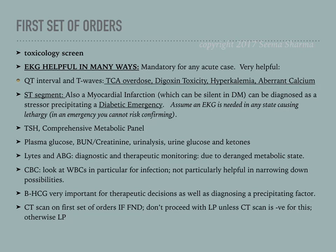The TSH, comprehensive metabolic panel, plasma glucose, urine glucose, and urine ketones help guide what kind of endocrinologic emergency you may have. BUN and creatinine assess kidney function, which can be affected in HHS due to intravascular volume depletion causing acute kidney injury. An ABG is critical to determine metabolic state — whether there is metabolic acidosis or alkalosis.